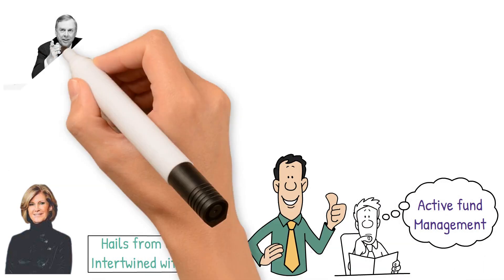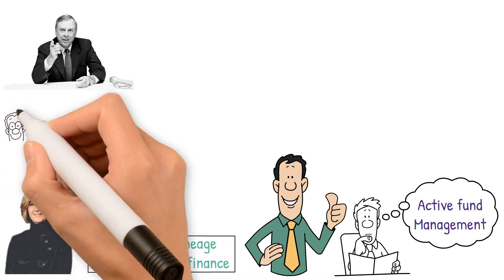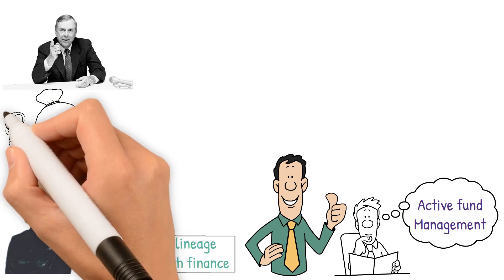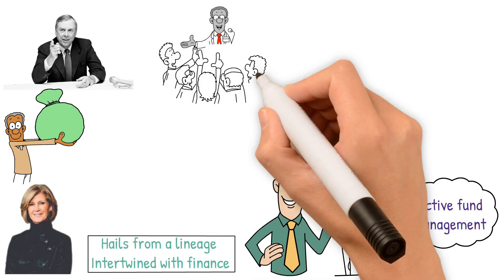Boone Pickens, coined the oil oracle by CNBC, accumulated his wealth after turning 70, debunking age-related myths. His acumen in forecasting and his strong views on U.S. dependency on foreign oil make him a prominent voice in the industry.